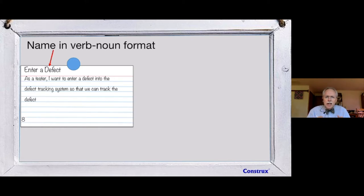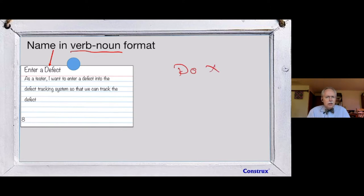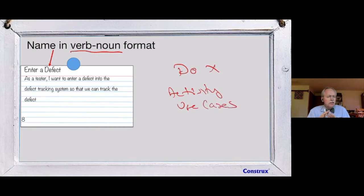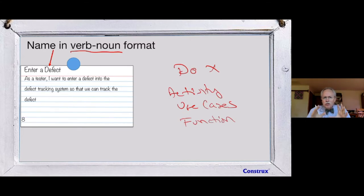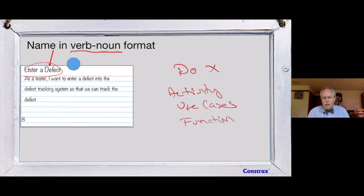On the front of the card is the name, in a verb-noun format — 'do X,' 'do a thing.' This verb-noun format is familiar from activity models and use cases. It describes a function someone performs. The verb-noun is just enough to help us find where we are quickly without reading every description, and it gives clarity about what we're really talking about.